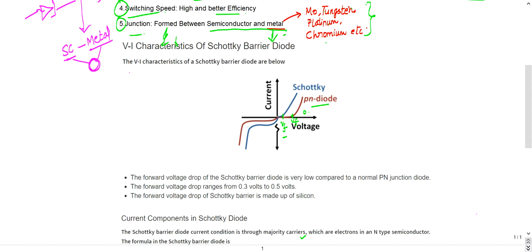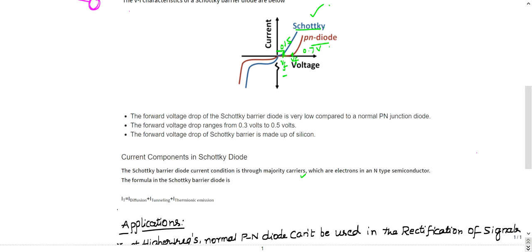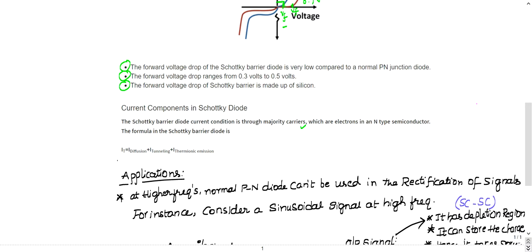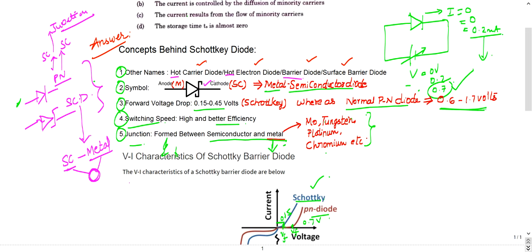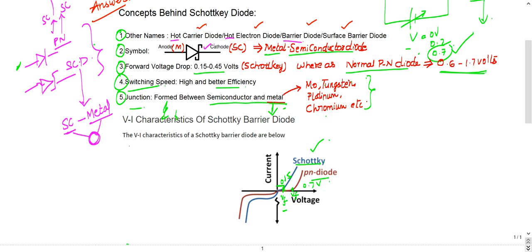Looking at the VA characteristics, the forward cut-in voltage is very low for the Schottky diode — around 0.15 volts — meaning current starts flowing at 0.15 V, whereas the PN junction needs about 0.7 V. The forward voltage drop of the Schottky barrier ranges from 0.3 to 0.5 volts (some sources say 0.15 to 0.5 V). The semiconductor material used is silicon.